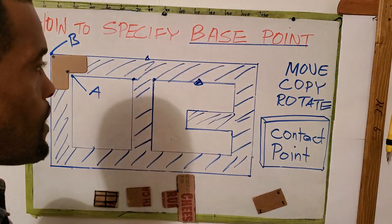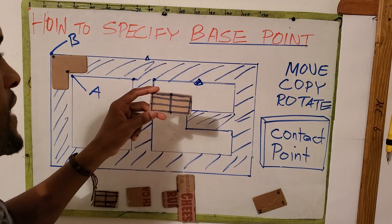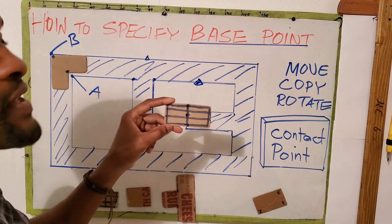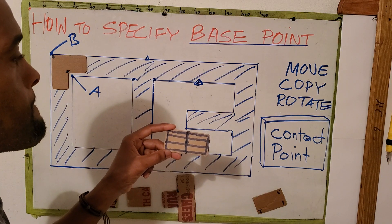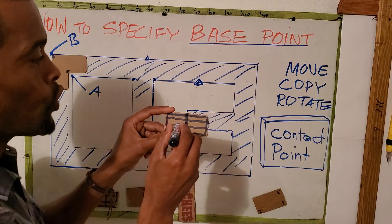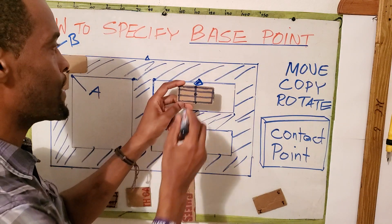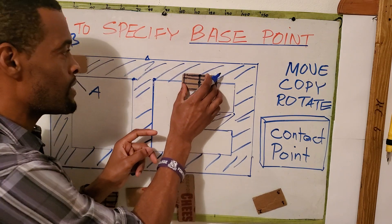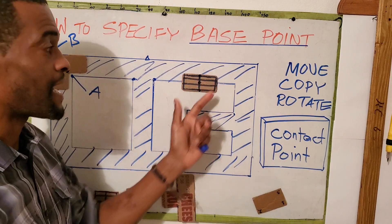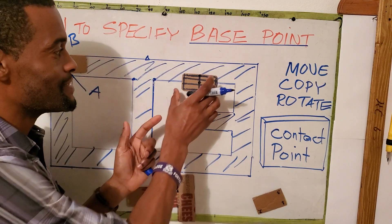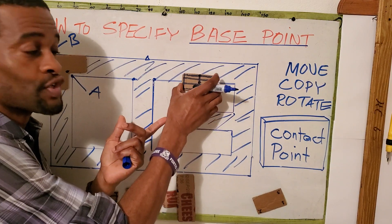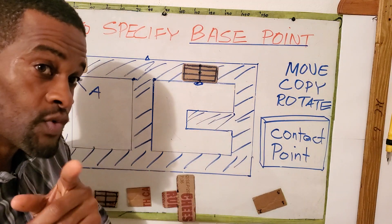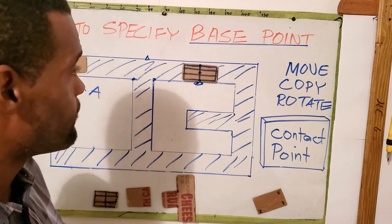Next question: what would be the likely effect if you chose the middle of the object as the base point and then tried to snap onto this point? That is exactly what would happen — the window would not effectively align where you want it to. So choosing the correct base point is very, very important.